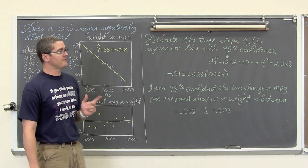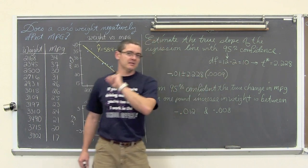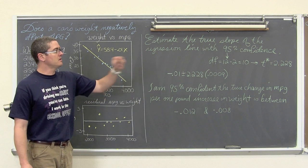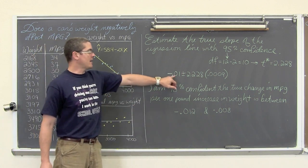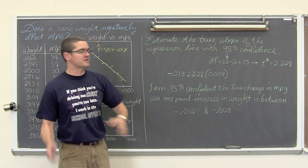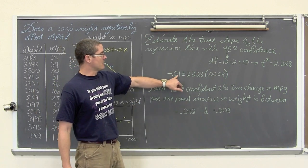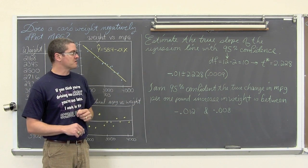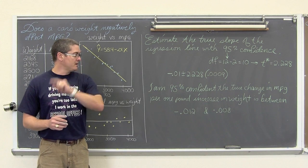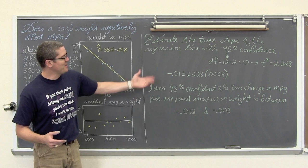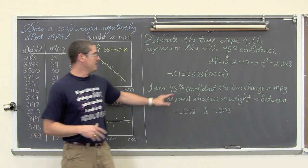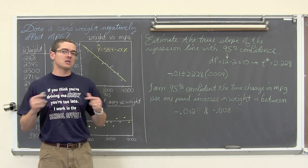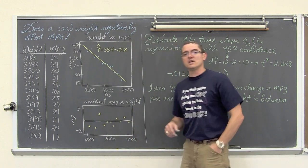To estimate the true slope of the regression line with 95% confidence: with degrees of freedom of n minus 2 equals 10, the t* critical value for 95% confidence is 2.228. Our observed slope (lowercase b) is negative 0.106. Using b plus or minus t* times the standard error of the slope, we get a confidence interval. I am 95% confident that the true change in miles per gallon per increase of one pound is between negative 0.012 and negative 0.008. Slope is the average change in y per one unit of change in x.